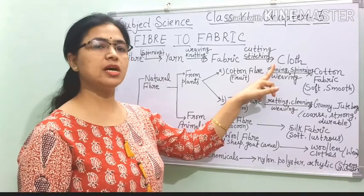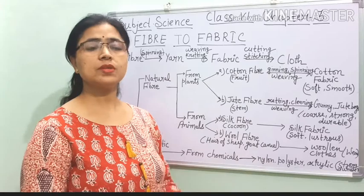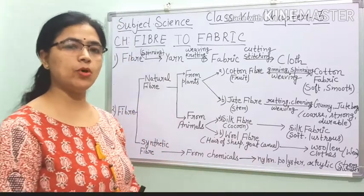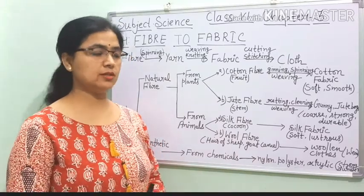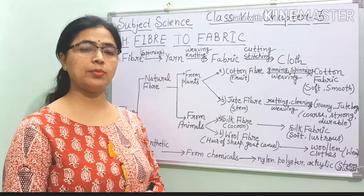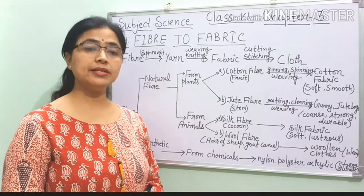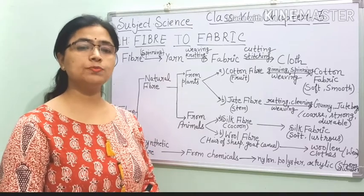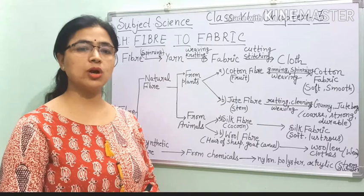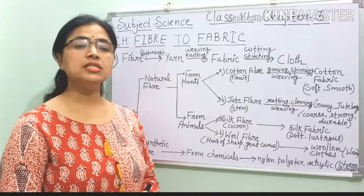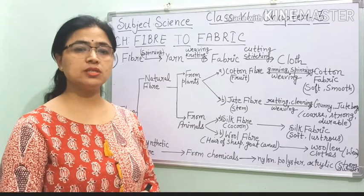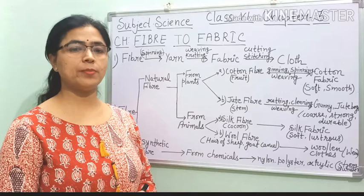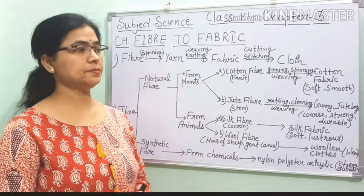Different types of clothes are there — school uniform, lehenga made of different fabric, sarees made of different fabrics, coat pants, trousers, t-shirts, woolen clothes — so many types of fabrics are there.